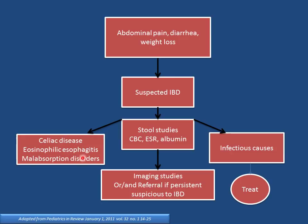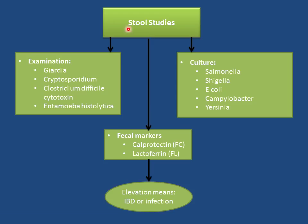Stool studies important for evaluating IBD: stool culture for Salmonella, Shigella, E. coli, Campylobacter, and Yersinia — all can cause abdominal pain and bloody diarrhea. Rule out infectious causes whenever IBD is suspected. Also examine for Giardia, Cryptosporidium, Clostridioides difficile (especially after antibiotic use), and Entamoeba histolytica (especially with travel history).